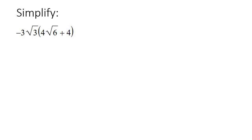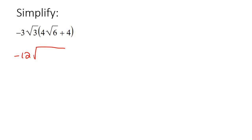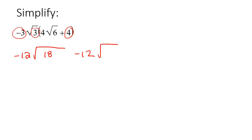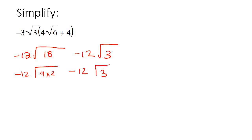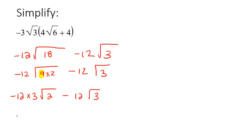Here's our next example — this one's quite interesting. You're going to multiply: the 3 and the 4 make 12, so it would be negative 12, and then square root 3 and square root 6 would be square root 18. Then multiplying over to the 4: the 4 and the negative 3 make negative 12, and you're just left with square root 3. Now square root 18 can be simplified as 9 times 2, and we know the square root of 9 is 3, so 12 times 3 is 36. There is our final answer — we cannot simplify any further.